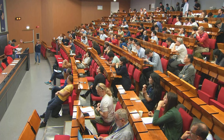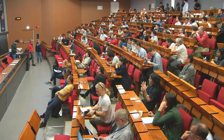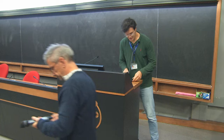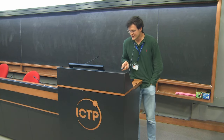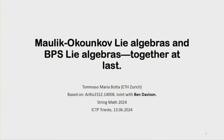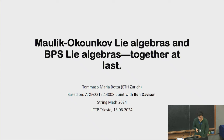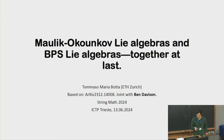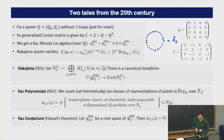The next speaker is Tommaso Maria Botta. Today's talk, which is based on joint work with Ben Davison, is about two Lie algebras that naturally arise in connection with string theory and quantum field theory: the Maulik-Okounkov Lie algebra and the BPS Lie algebra. I will start with two tales from the 20th century. Fix a quiver Q without one loop for now. We can define its generalized Cartan matrix. We all know that out of it we can produce a Lie algebra — a Kac-Moody Lie algebra — defined over Q with its standard triangular decomposition.